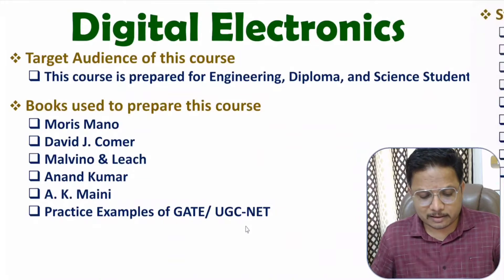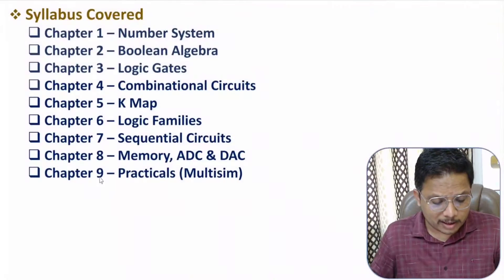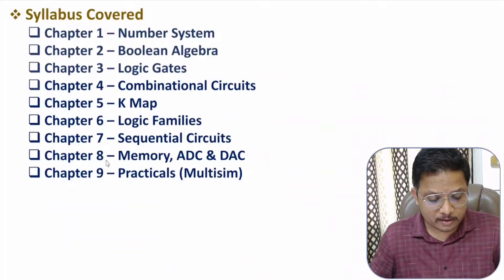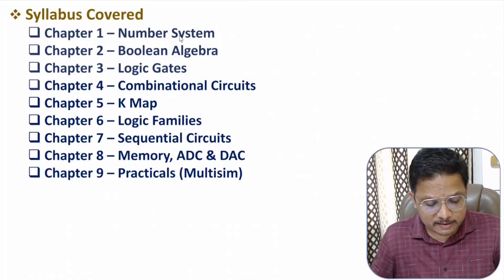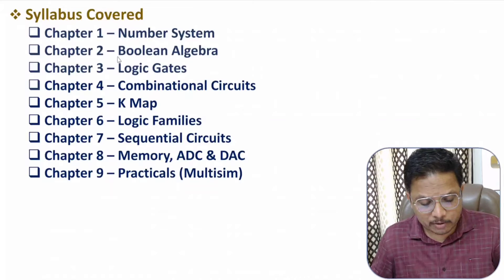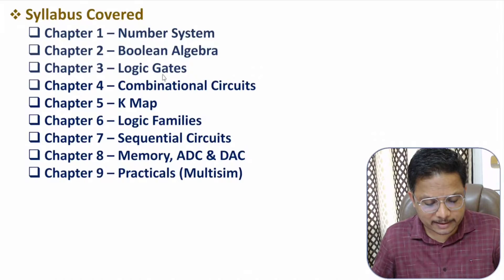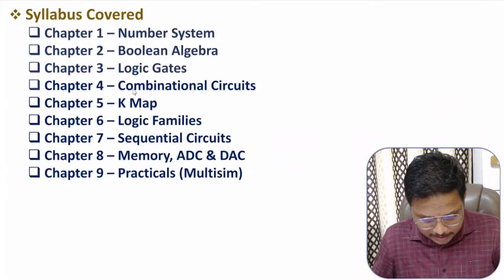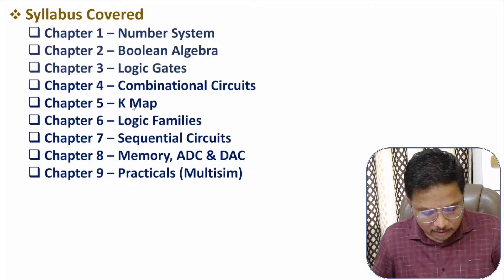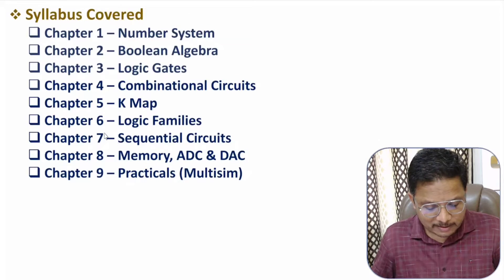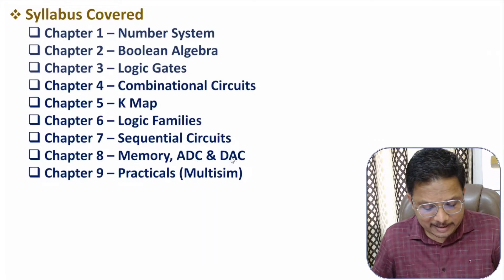If you observe the syllabus, in total nine chapters are there. First chapter is of number system. Second chapter is of Boolean algebra. Third chapter is of logic gates. Fourth chapter is of combinational circuits. Fifth chapter is of memory, ADC and DAC.